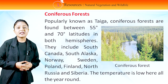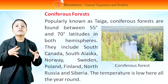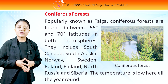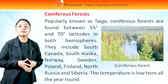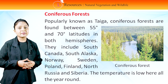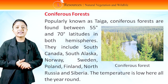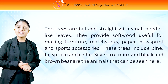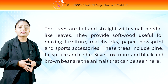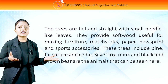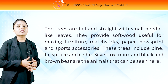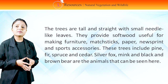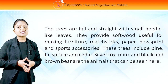Coniferous forests, popularly known as taiga, are found between 55° and 70° latitudes in both hemispheres. They include South Canada, South Alaska, Norway, Sweden, Poland, Finland, North Russia and Siberia. The temperature is low here all year around. In this picture, you can see coniferous forest. The trees are tall and straight with small needle-like leaves. They provide softwood useful for making furniture, matchsticks, paper, newsprint and sports accessories. These trees include pine, fir, spruce and cedar. Silver fox, mink and black and brown bear are the animals that can be seen here.